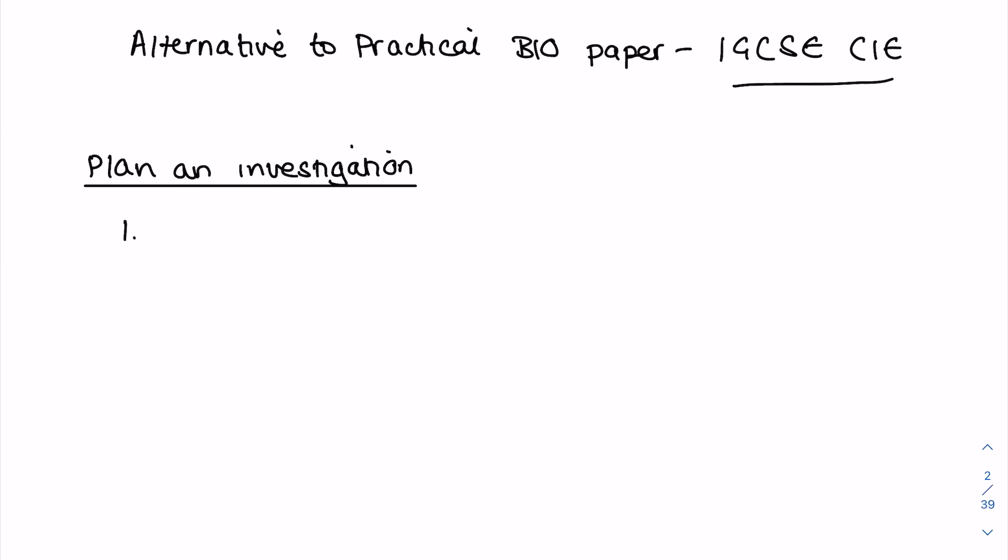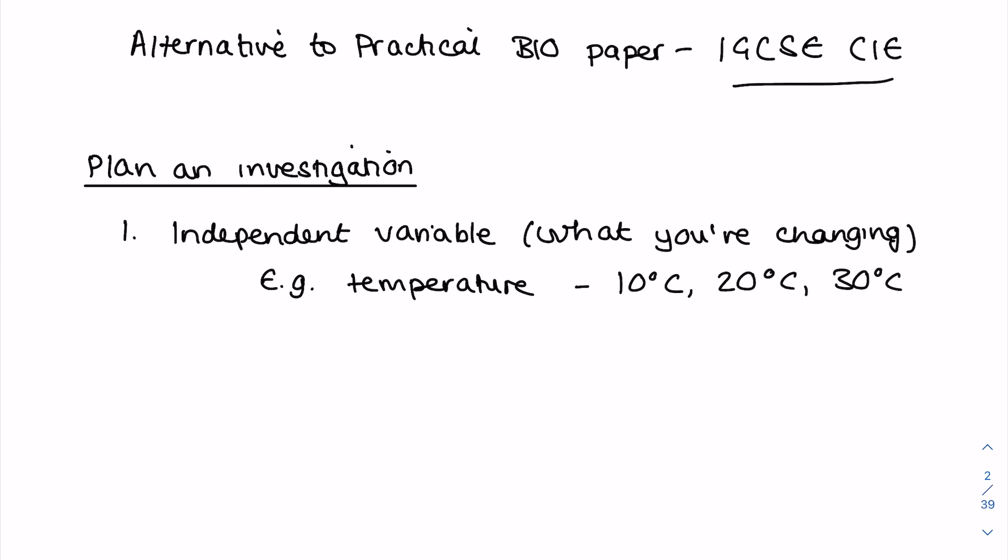So the first thing I would do is use the variable layout. It will be clear in the question as to what you're changing, but really point that out. So it could be, for example, temperature. I would list the independent variable of this investigation is the temperature and I would give a range of temperatures to use because CIE likes that, and I'd even show how I'm maintaining those temperatures, so I could say using a water bath.